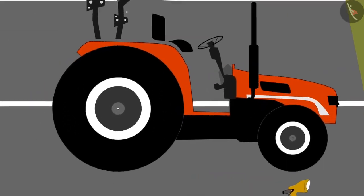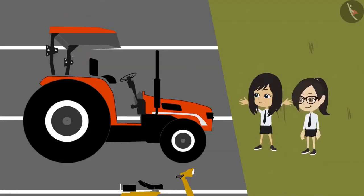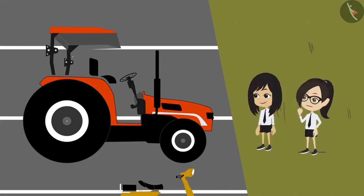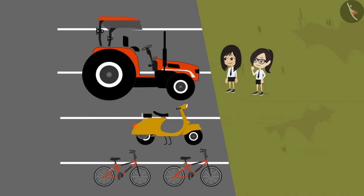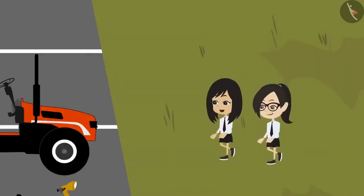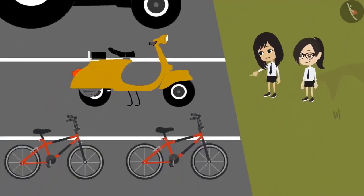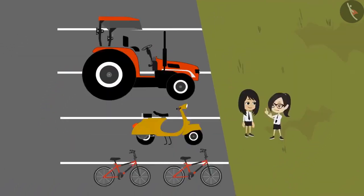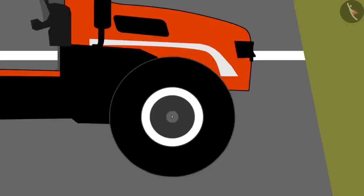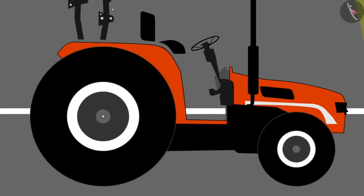I am shocked to see its tyres. Look, they are almost as big as us. Yes, they are very big. Compared to them, the tyres of our bicycles look so small. And look at the tyres of the scooter — they are smaller than those of our bicycle. But the tractor also has two types of tyres and the front tyre is smaller than the rear tyre.